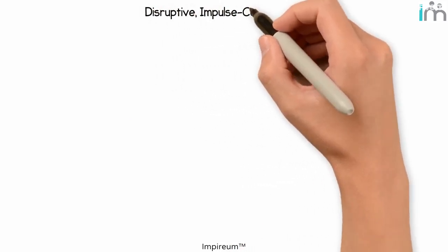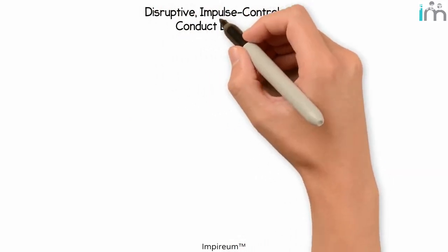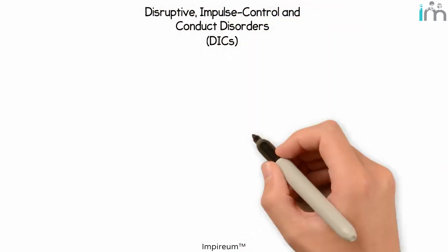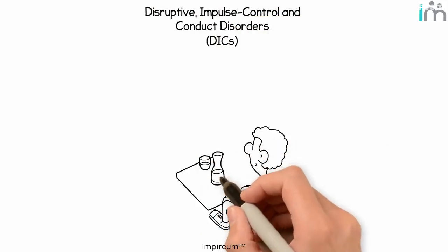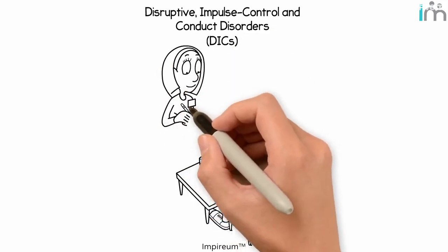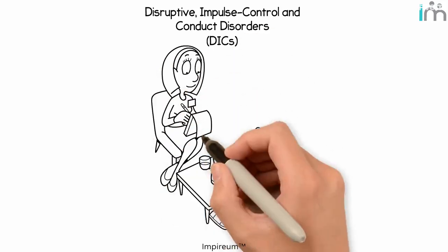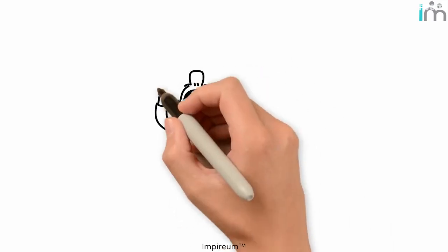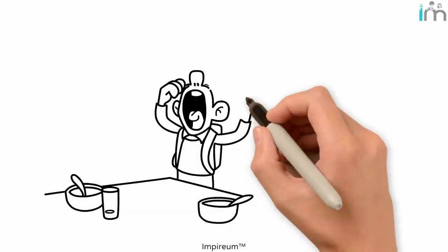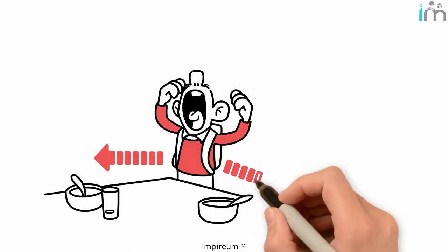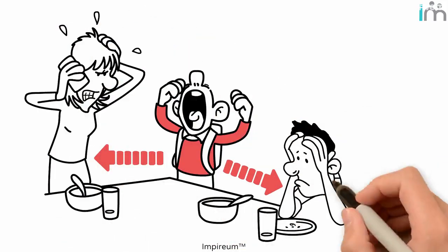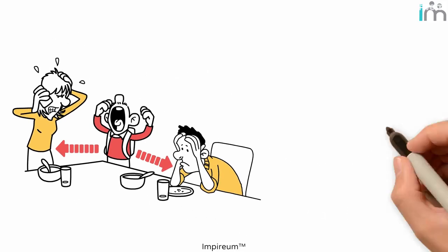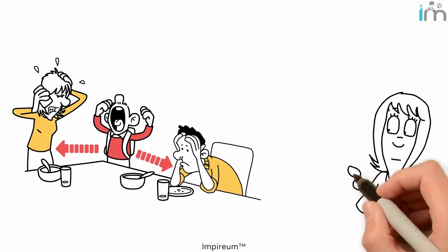Disruptive Impulse Control and Conduct Disorders, or DICs, are increasingly recognized as very real, very serious mental health matters that require professional treatment to get under control. An interesting feature of DICs is how the person's inner turmoil is expressed outwardly — they literally drag other people into their dilemma. There are a lot of different types of these disorders.